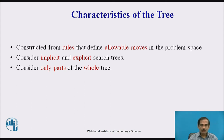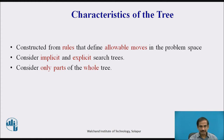A tree is constructed from rules that define allowable moves in the problem space. We consider both implicit and explicit search trees to obtain our solutions. We consider only parts of the whole tree, because the solution exists in a particular part and knowledge of all nodes may not be important to us.